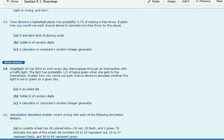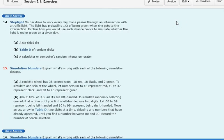The second problem here we're going to look at is number 14. In this case, we have a situation where a woman goes through a traffic light every day, and the light has a 1/3 probability of being green when she gets the intersection. How would you use a chance device to simulate whether the light is red or green? So here we're dealing with a 1/3 probability and a 2/3 probability.